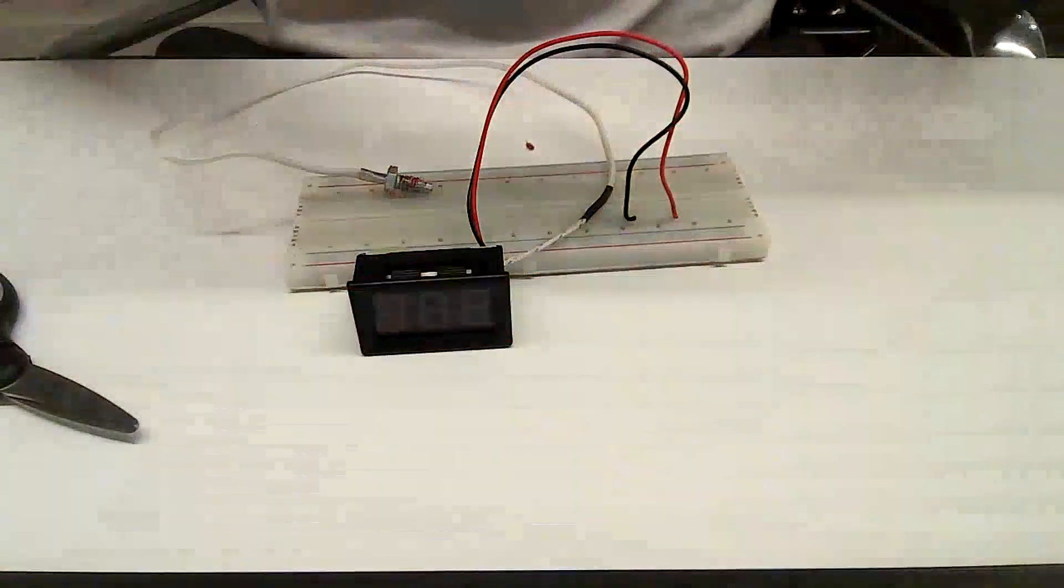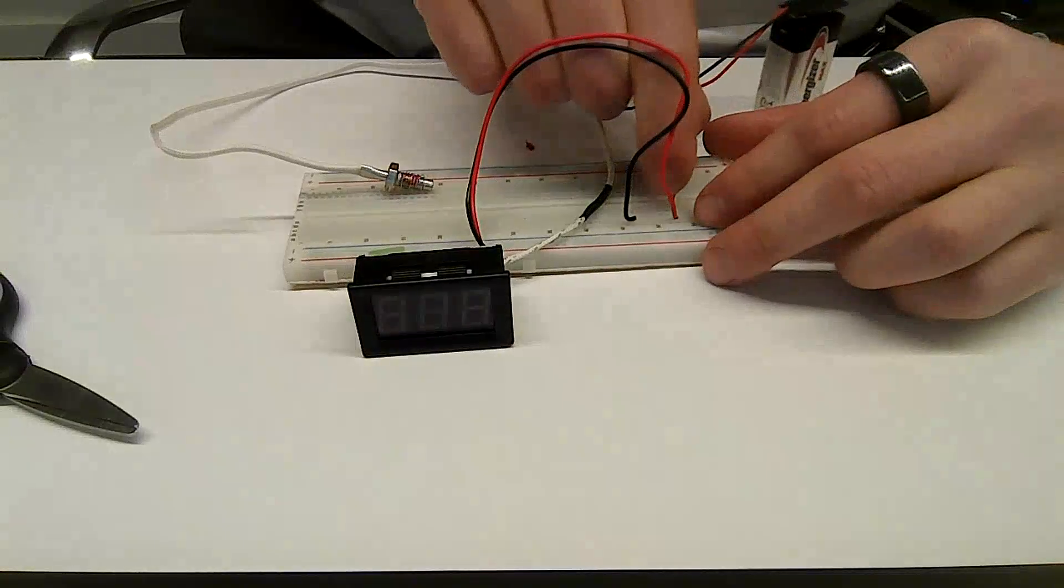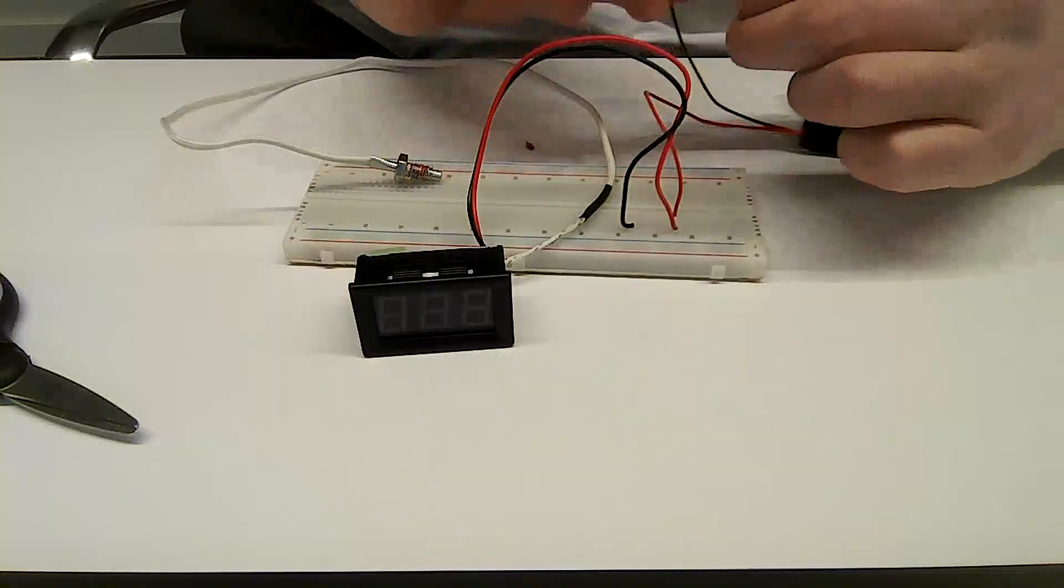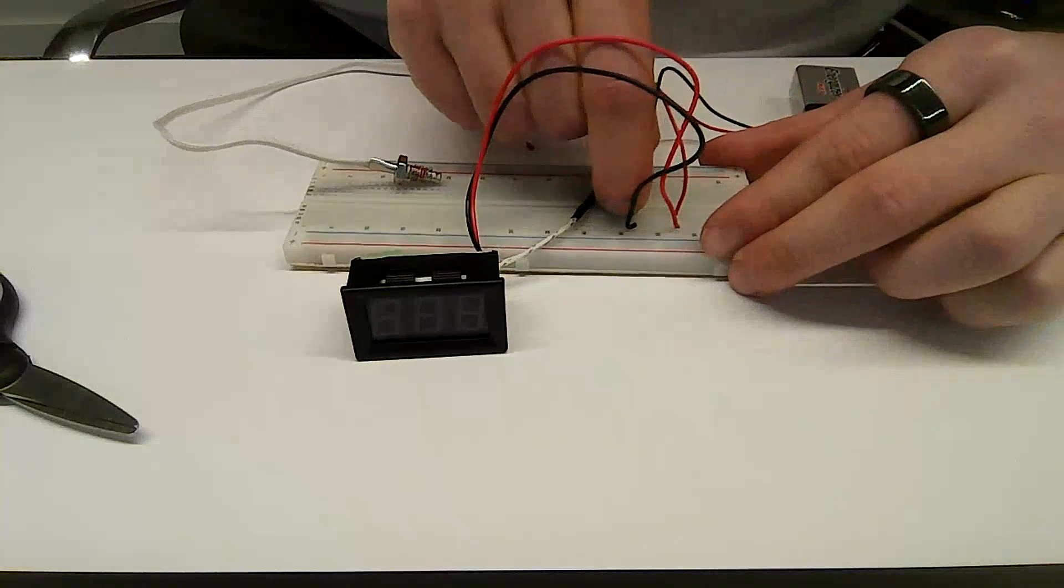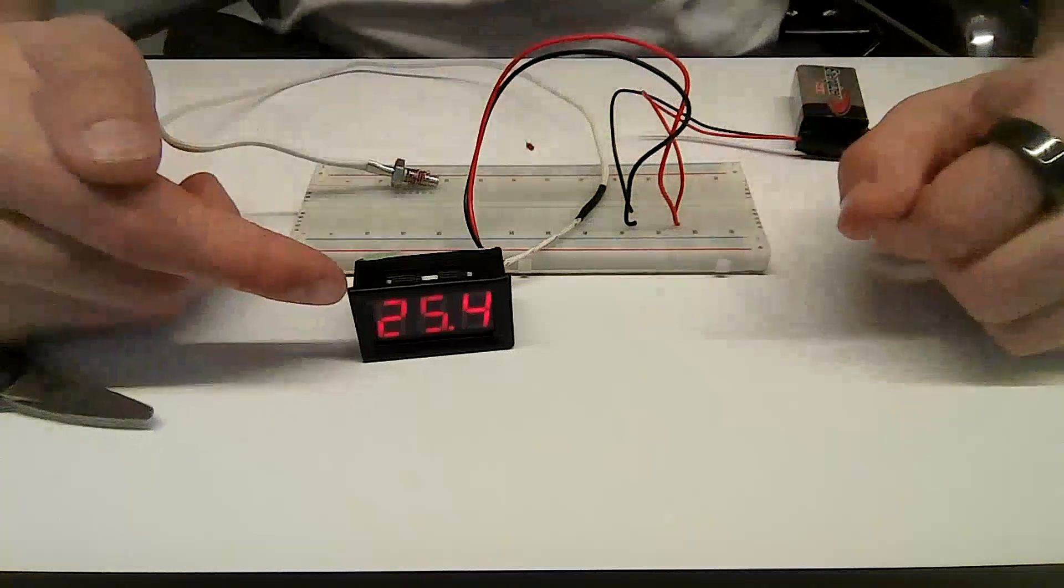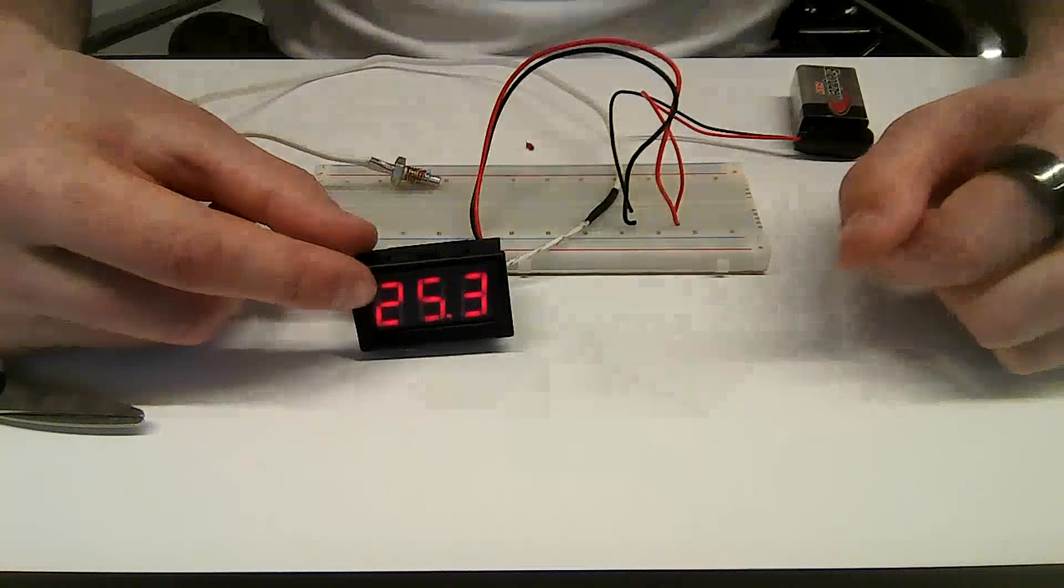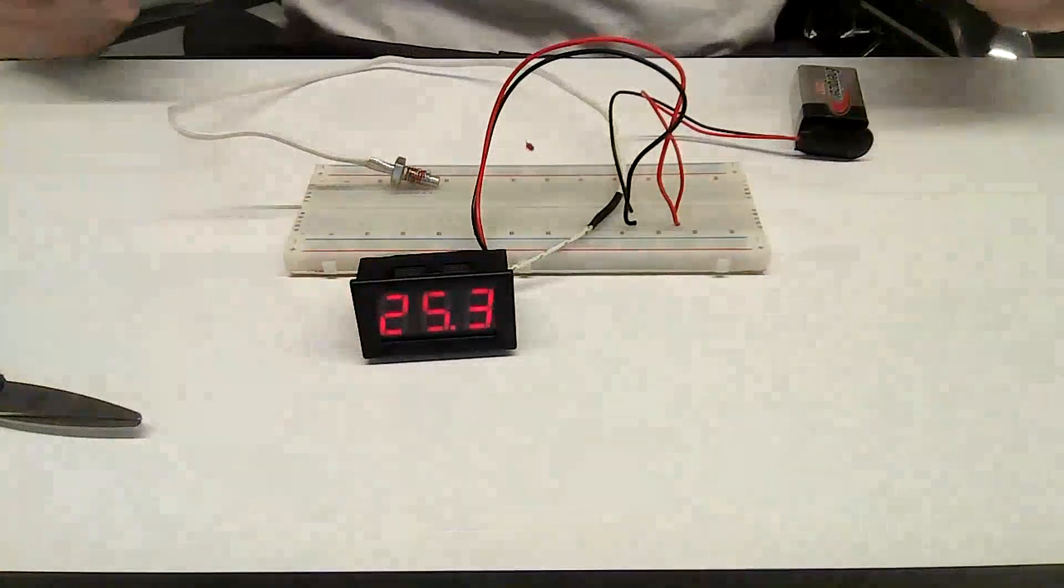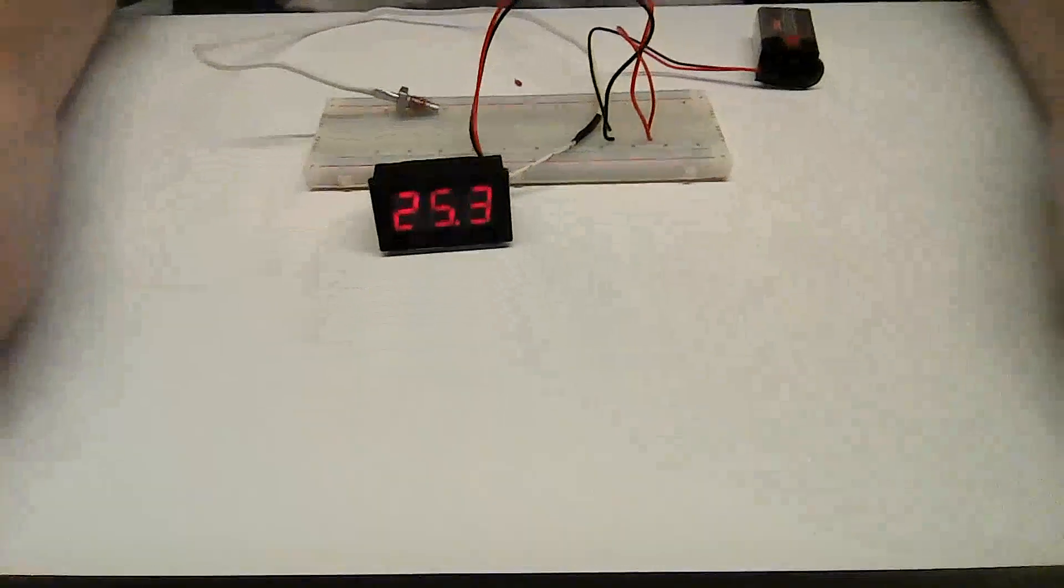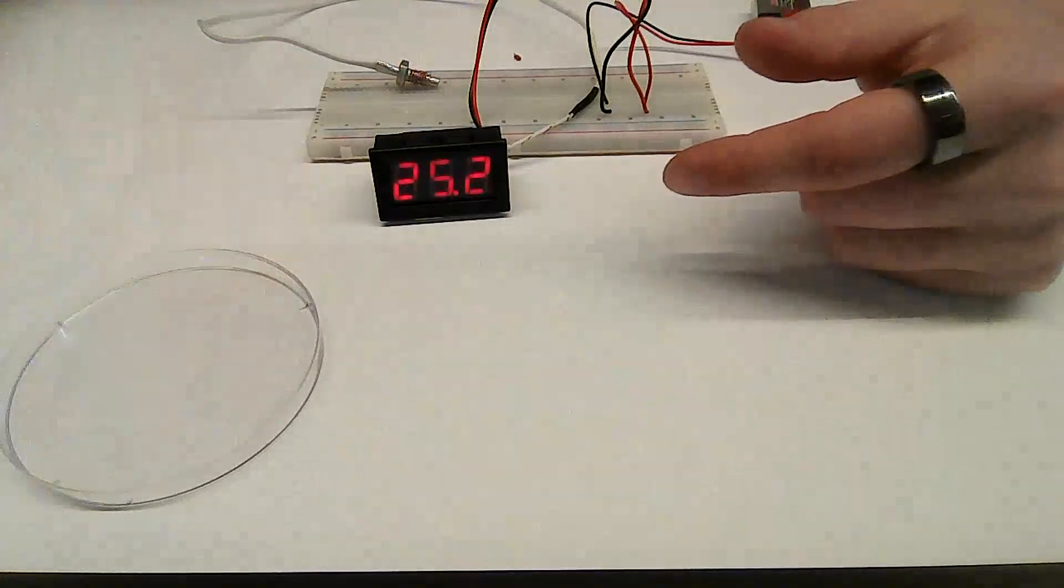So we're going to take the battery and plug in red to red, black to black. You should see the temperature display come on. I realize it's mirrored for you guys, but that's 25.3 is what it's showing right now. So this is the ambient temperature of the room is what this is going to show. The students should record that on their sheet.